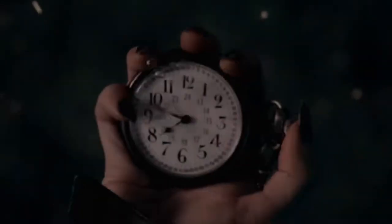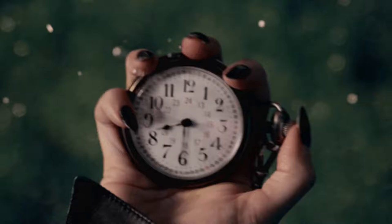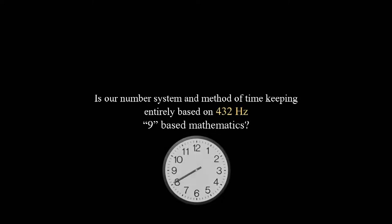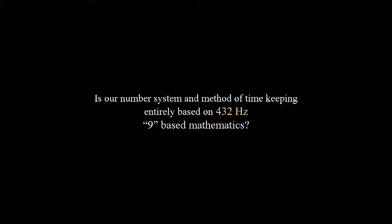Next, let's look further into how the 432 Hz frequency is in time itself. Is our number system and method of timekeeping entirely based on 432 Hz 9 base mathematics? How many seconds are in 12 hours? 43,200. That's 432. Divide or multiply a whole unit by 12. So 60 seconds times 12 equals 43,200 seconds. 36 times 12 equals 432. 36.666 times 12 equals 440. Interesting, isn't it?